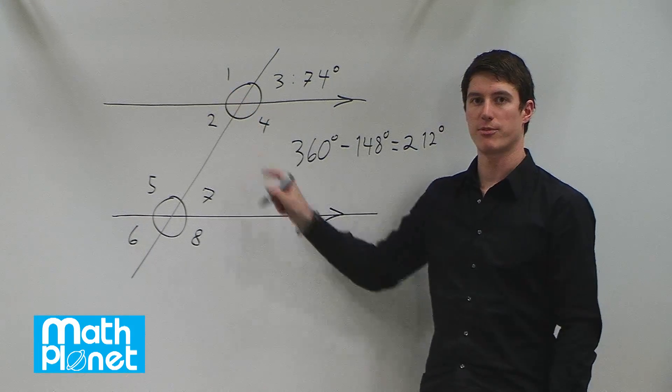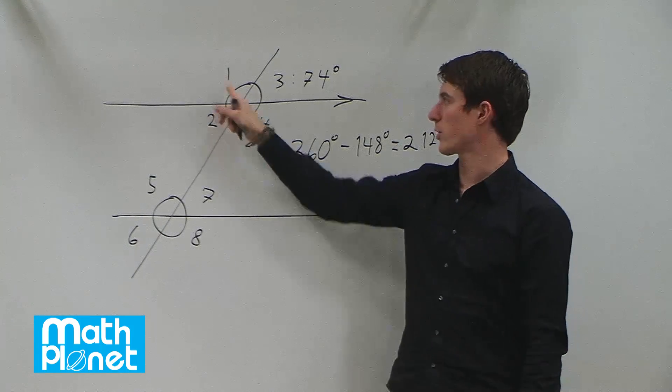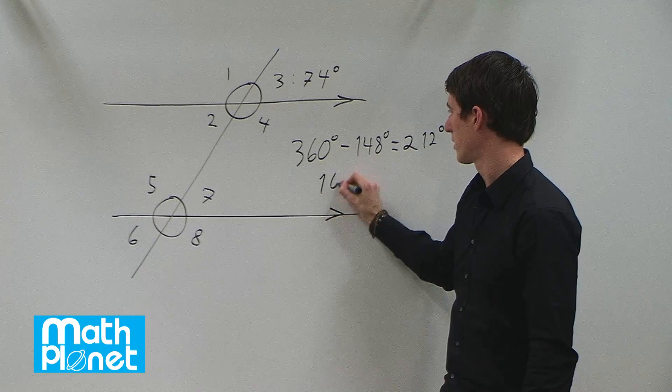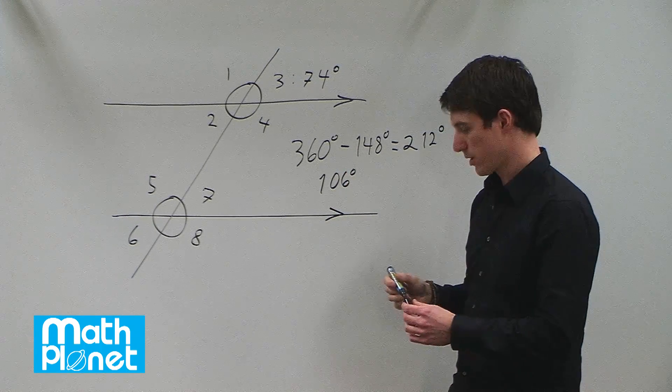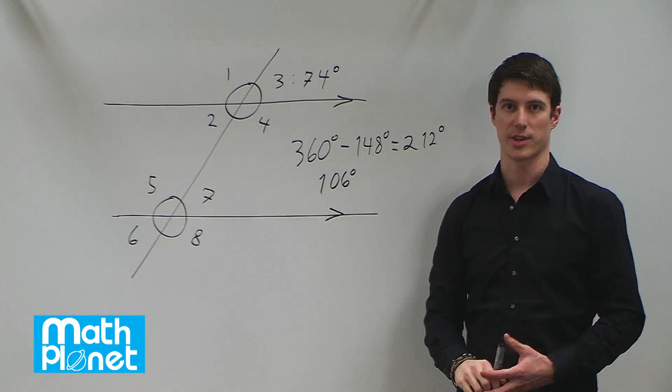So the sum of angles 1 and 4 is 212. Now we need to simply split that directly in two because these are going to be equal. So 212 divided by 2 is 106 degrees. So angles 2 and 3 are 74 degrees, and angles 1 and 4 are 106 degrees.